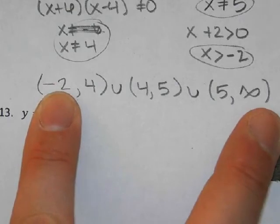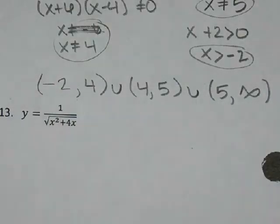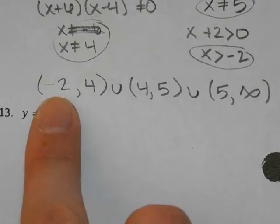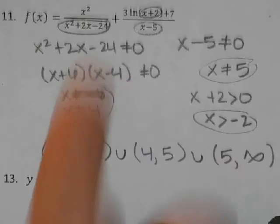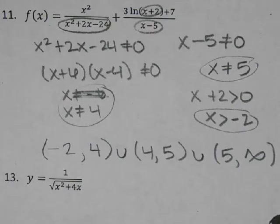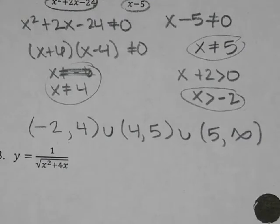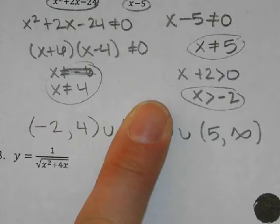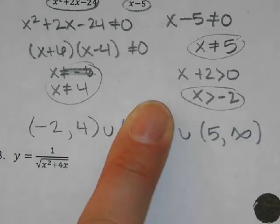So this means from negative 2 to infinity, but skip 4 and skip 5. Would you ever give us a problem this complicated on a test? I might give you something, but I wouldn't give you one that complicated. But I could give you one and say come up with a problem that would produce that domain. If you did not write that middle part, you'd skip all the answers between 4 and 5, and your answer would be technically wrong — there are a lot of decimals between 4 and 5, and all those decimals are okay. It's just the whole numbers 4 and 5 that are excluded.